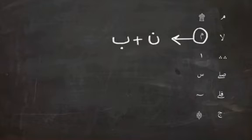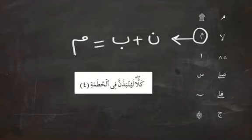Next, the sign that looks like meem, looks a little bit different than the other meem, so make sure you can distinguish between them because they mean two different things. And this meem appears in the middle of the word. So the noon and ba when they follow one another in the same word, you don't pronounce noon but you pronounce meem. Like in this example, you read kalla layum badhenna fil hotama.